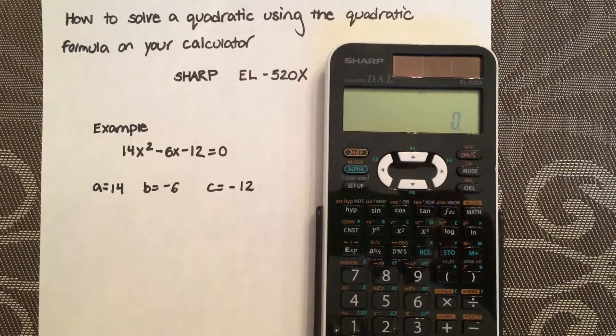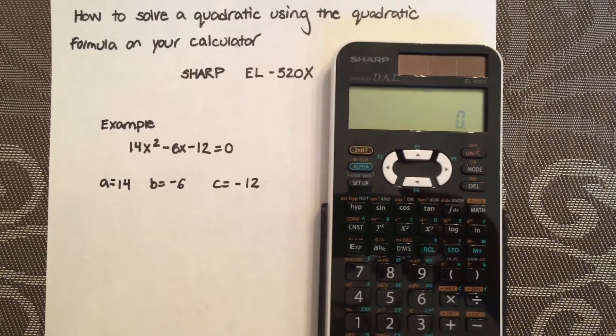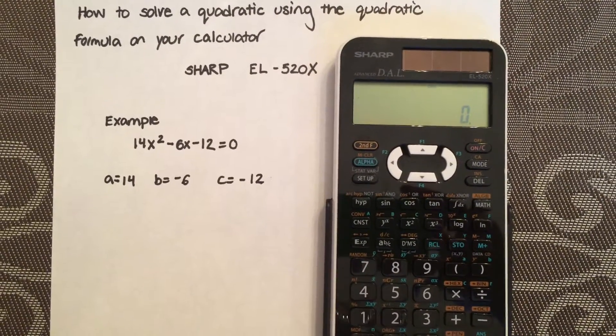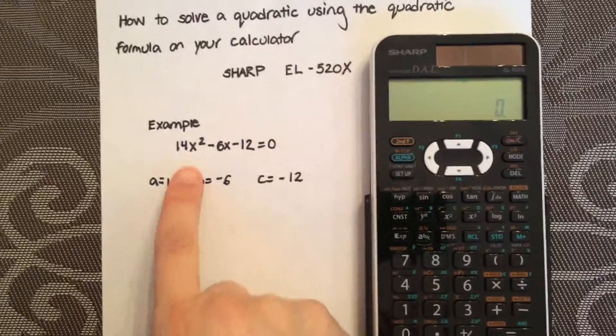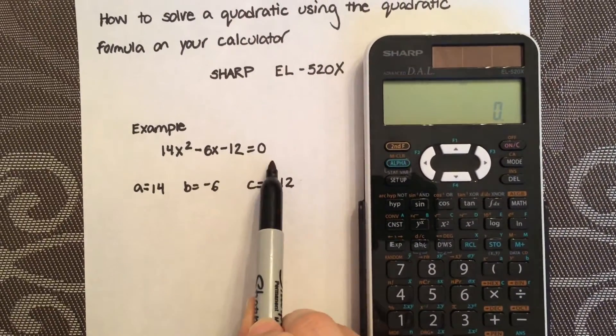How to solve a quadratic using the quadratic formula on your calculator using a Sharp EL-520X. The example I'm going to show you today is 14x² - 6x - 12 = 0.